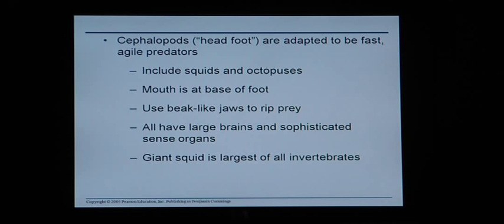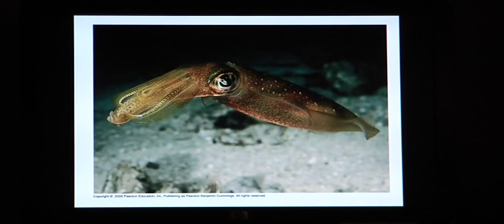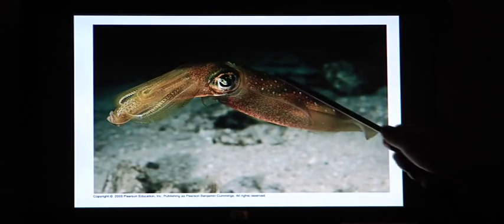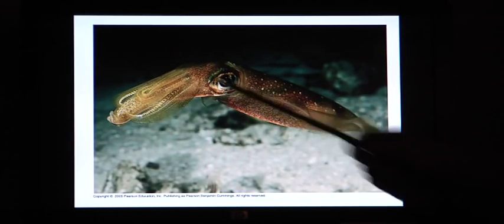Cephalopods are adapted to be fast, agile predators — these include squid and octopus. The mouth is at the base of its foot, and it uses a beak-like jaw to rip prey open. All have large brains and very sophisticated sense organs. The giant squid is the largest of all invertebrates. Here's a picture of a squid — it has very large eyes, and its tentacles are down here with the little beak embedded within them. Octopuses are very strong, very muscular animals.